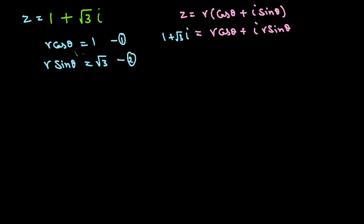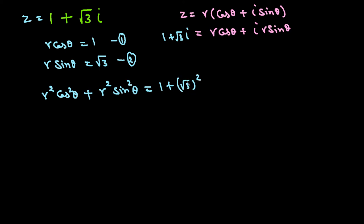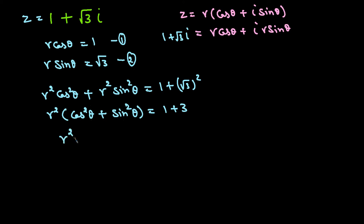Squaring and adding both equations: R² cos²theta plus R² sin²theta equals 1² plus (square root of 3)². Taking R² as a common factor, cos²theta plus sin²theta equals 1, and square root of 3 squared is 3. So R² times 1 equals 1 plus 3, which gives R² equals 4.